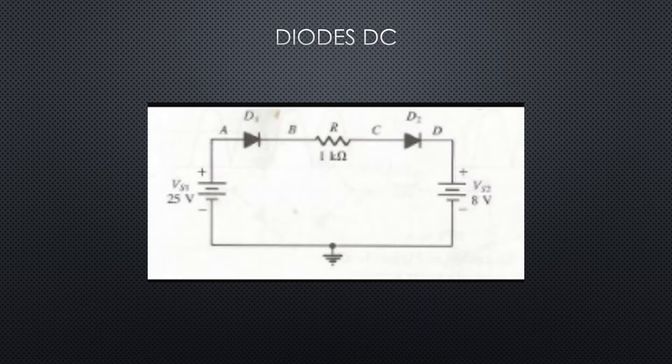For any diode circuit, in order to know if the diode is forward biased or reverse biased, we need to know the potential that would be across that diode if the diode wasn't there — essentially a V_thevenin for the diode. For this circuit, we want to know what the voltage is from this point to this point.